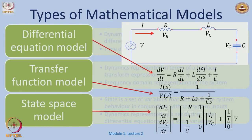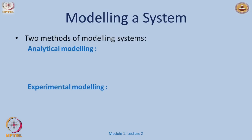The other thing we could do is take a second order differential equation and rewrite it as a set of two first order differential equations, which has a matrix structure — this is what we call a state space model. We will eventually learn each of these model types in detail and understand which model is fit for what purpose and what kind of information each provides.